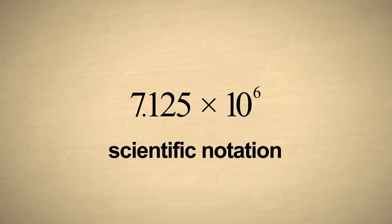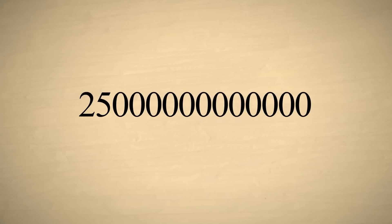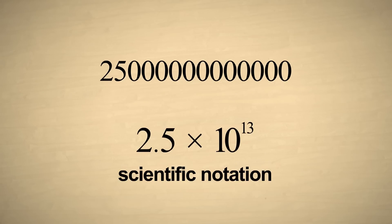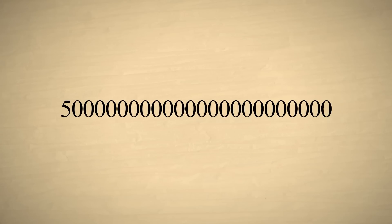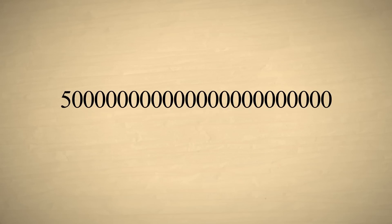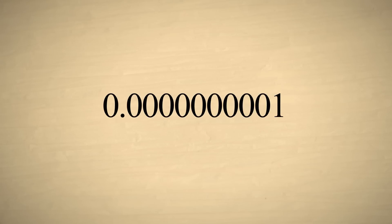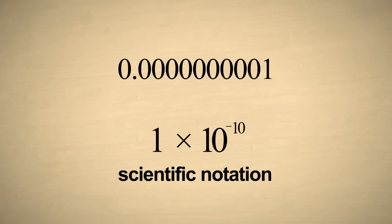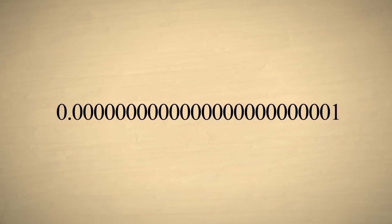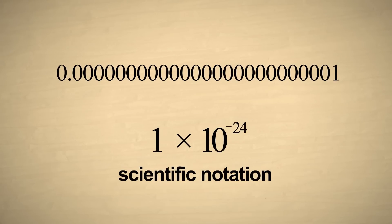For instance, the distance to the nearest star, 25 trillion miles, expressed in scientific notation is 2.5 times ten to the thirteenth miles. And the number of atoms of gas in a toy balloon, about 500 sextillion, expressed in scientific notation is 5 times ten to the twenty-third. Very small numbers are also much easier to express in scientific notation. For example, the size of an atom of helium, about one ten-billionth of a meter, expressed in scientific notation is 1 times ten to the negative ten meters. And one yoctosecond is 1 times ten to the negative twenty-four seconds.